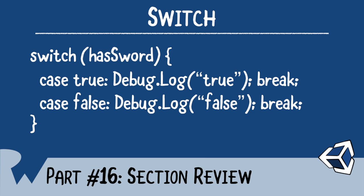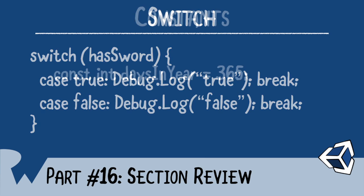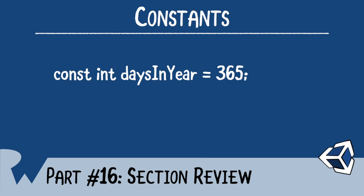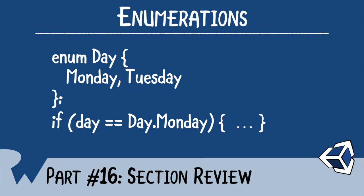Next, you learned about constants and enumerations. Constants are variables that don't change, which can be good in some circumstances — you wouldn't want the number of days to change in a year, so long as you lived on Earth. Enumerations provide a limited set of values, which read very easily in code.